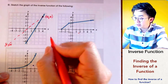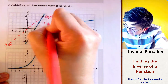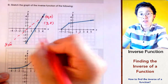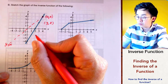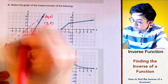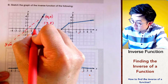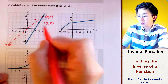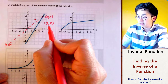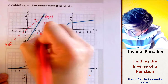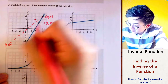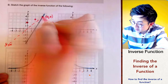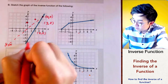The second point is at (3, 2), so its inverse is (2, 3) — x is 2 and y is 3. For the point (2, 0), its inverse is (0, 2), which is plotted accordingly.